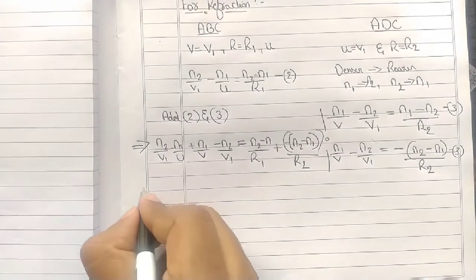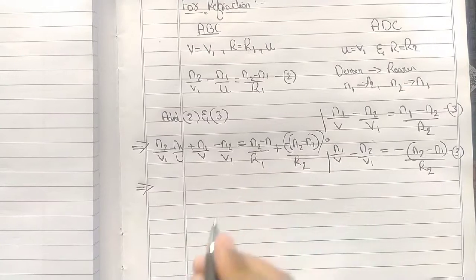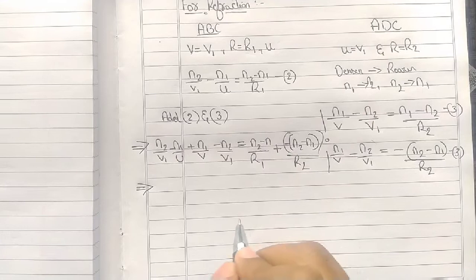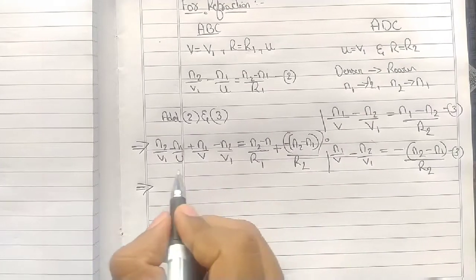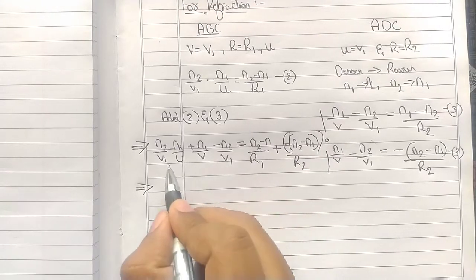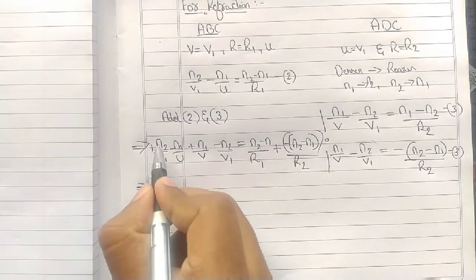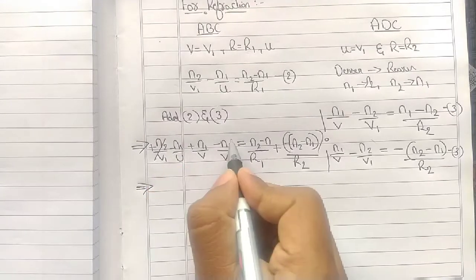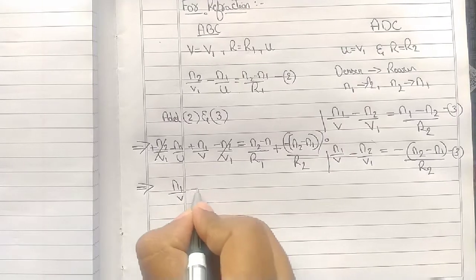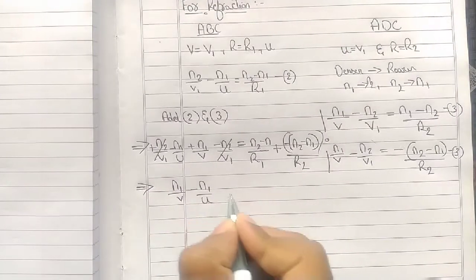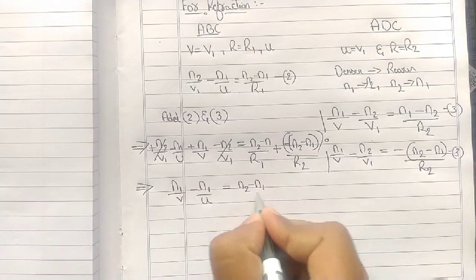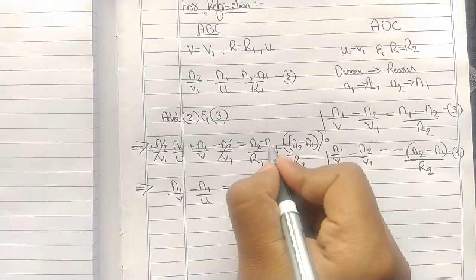You can see in the left-hand side, N2 by V1 and N2 by V1 are common and the signs are opposite, so cut them off. We are left with N1 by V minus N1 by U equals N2 minus N1 by R1 minus N2 minus N1 divided by R2.